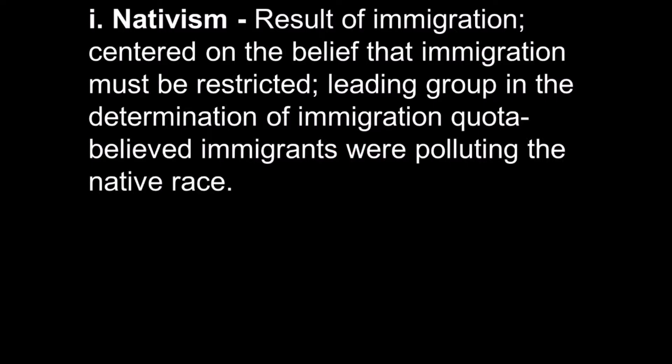The result of all this immigration was a concept called nativism — a belief that immigration had to be restricted, leading to group determination and immigration quotas. At some point it was called know-nothingism. Nativists wanted to protect the so-called 'native' population — not Native Americans, but white Anglo-Saxon, usually Protestant people in New England — from new Eastern European immigrants bringing different cultures, religions, and languages. They believed these people were 'polluting the native race,' making it a racist and jingoistic belief that caused great strife for incoming immigrants.